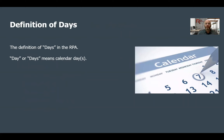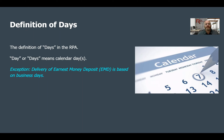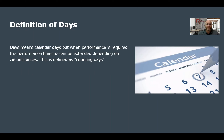The definition of days in the RPA means calendar days. Nothing has changed with that — it's still calendar days unless you're pertaining to the delivery of the earnest money deposit, which is still business days. Days means calendar days, but when performance is required, the performance timeline can be extended depending on circumstances. This is defined as counting days.